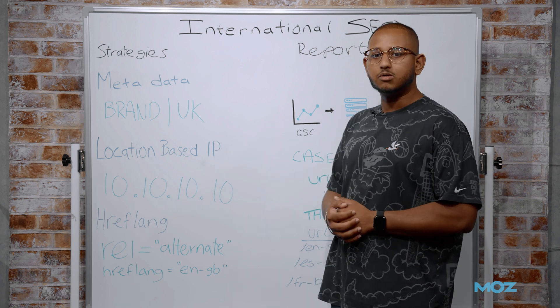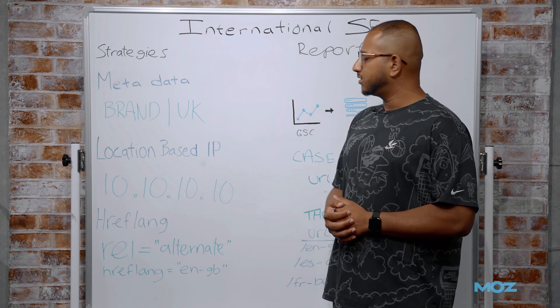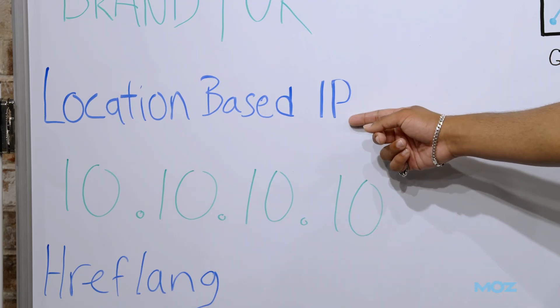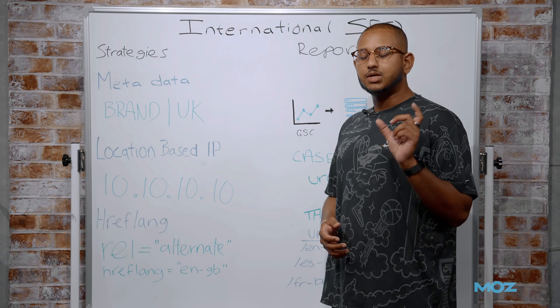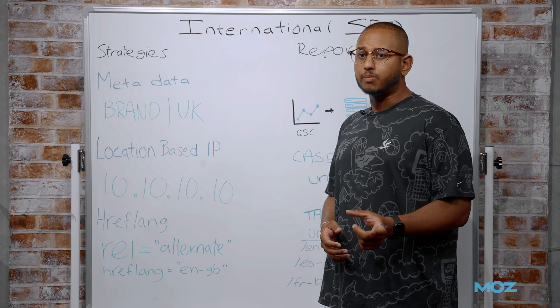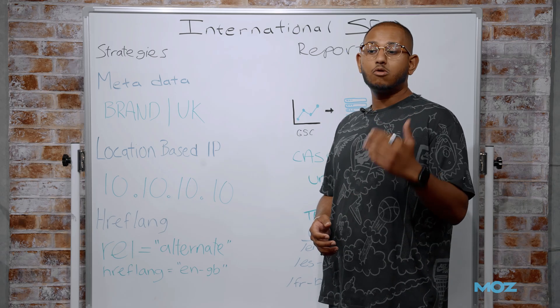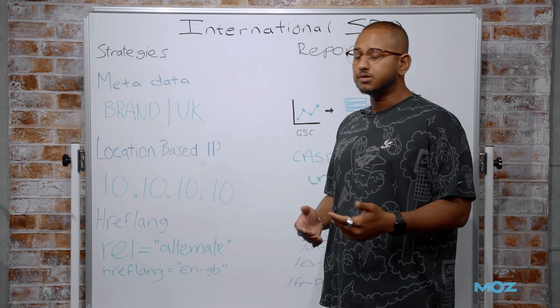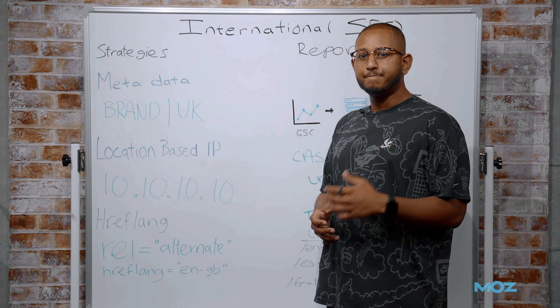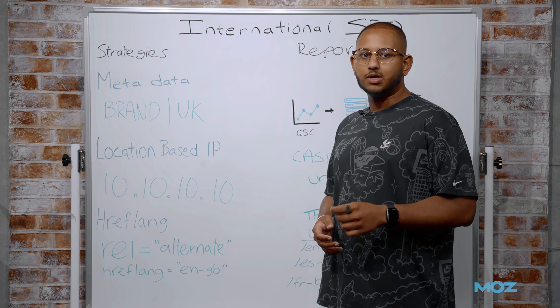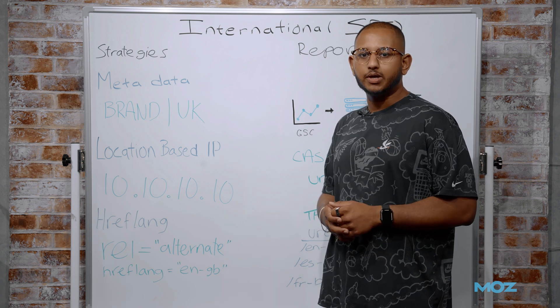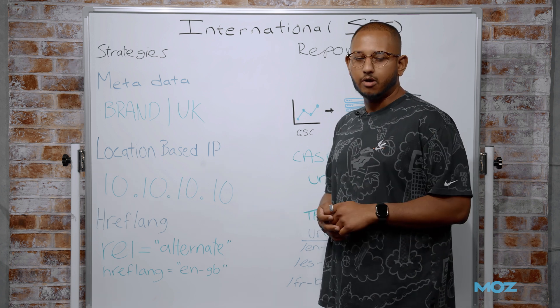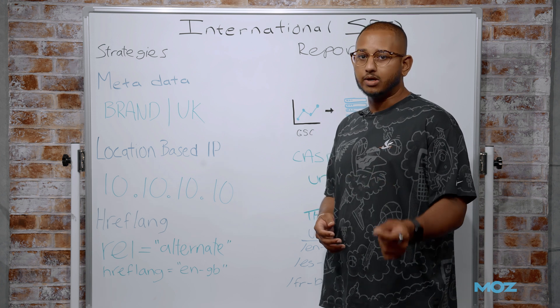So another more technical method that we could use is location-based IP. What this does is it detects the user's IP when they land on your website, and then if they're not on the correct page, depending on what we're targeting and which country they're in, it can send them a little pop-up saying, we think you might be in the wrong place. Would you like to be redirected to where we think the correct destination is?